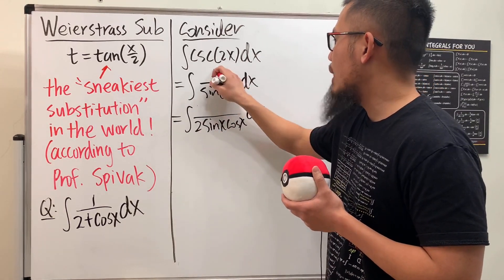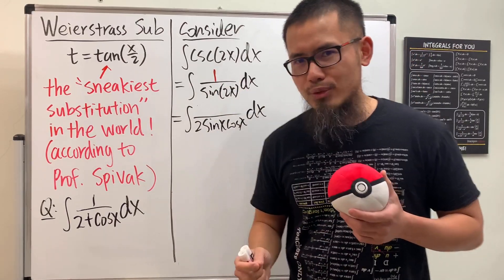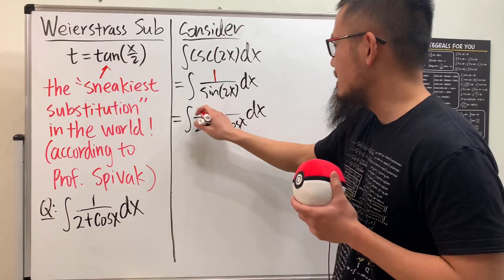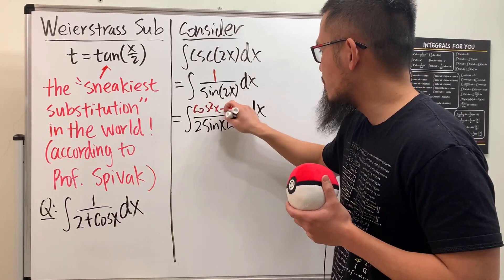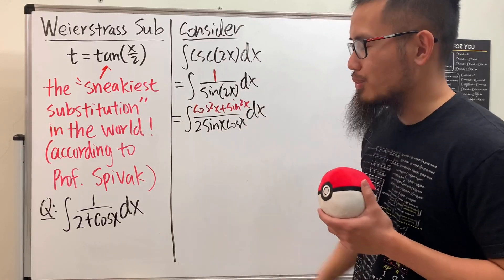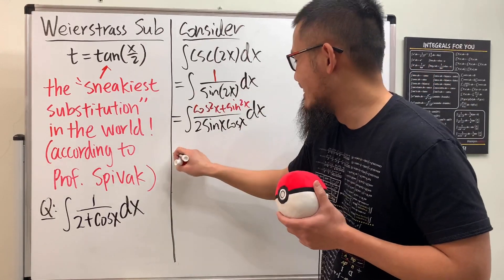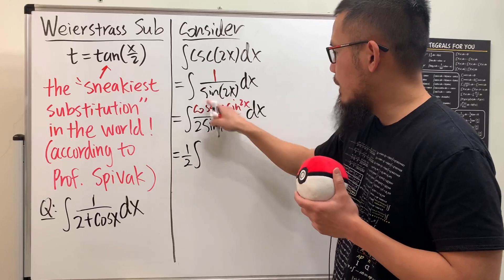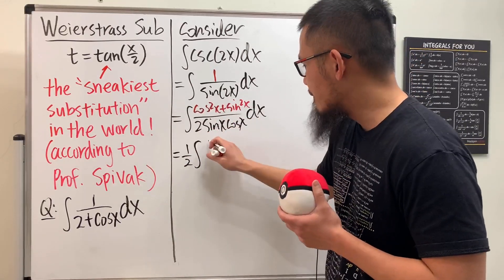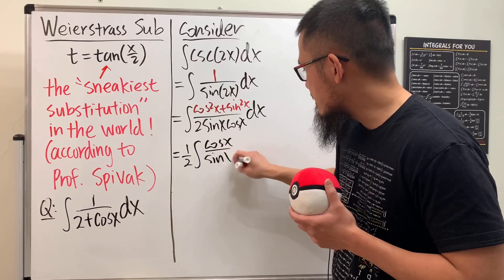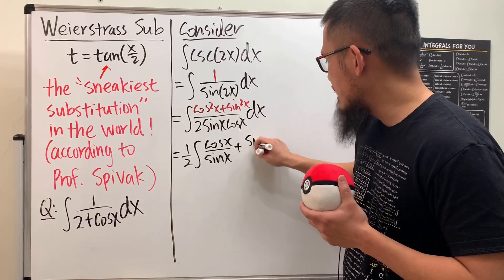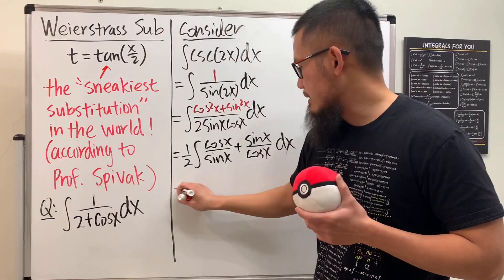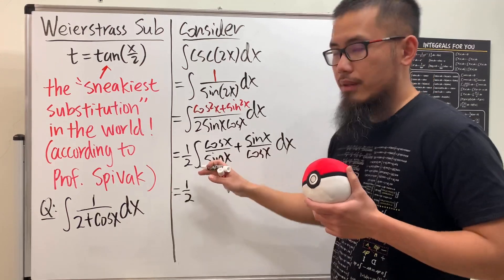On the top we have 1, and we know 1 equals cosine²x plus sine²x. So we take the one-half out front and split the fraction: one part gives cosine x over sine x and the other gives sine x over cosine x.